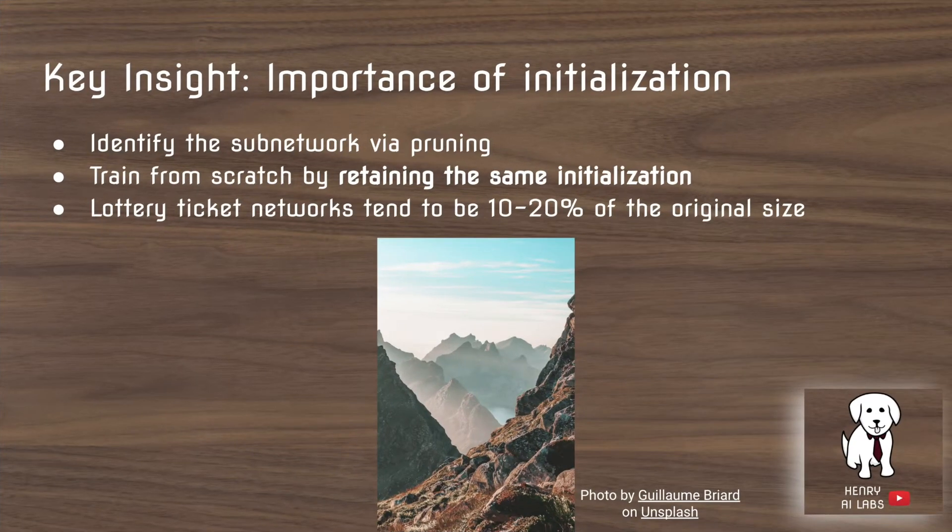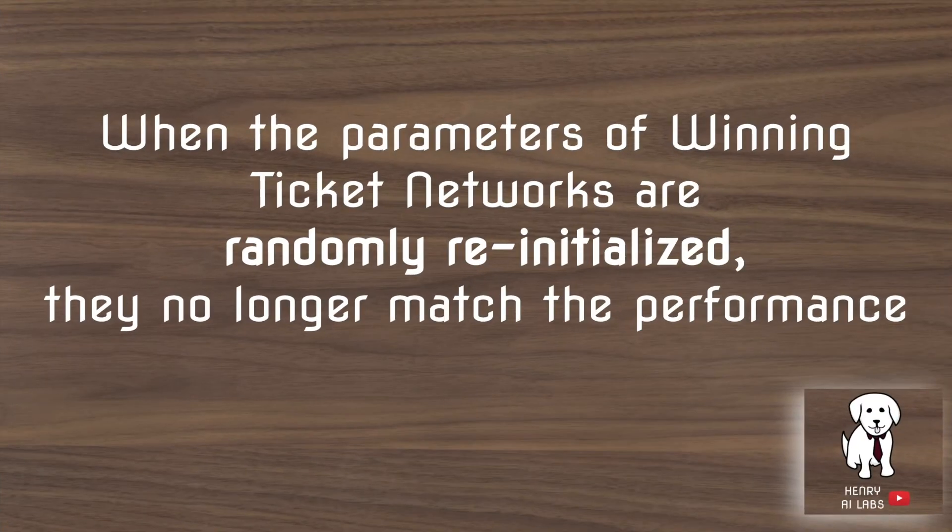So this is the key insight, and this is how they overcome this problem: initialization is super important for training pruned networks from scratch. So what they do is they find the subnetwork from pruning, and then they maintain the same initialization. So even though they've trained the network all the way to convergence at the end, and it has some weight, let's say 2.31, you would reinitialize it. So let's say even though it's 2.31 at convergence, if it started out at 0.77 for example, you would put it back to 0.77 to retrain the pruned network. And these lottery ticket networks tend to be 10 to 20 percent of the original size of the network. So this is the key idea: if you randomly reinitialize the weights after you prune it, they'll no longer match the test performance, and they're no longer going to find all the benefits of the pruned lottery ticket networks that can be trained from scratch.